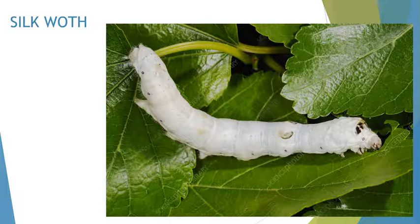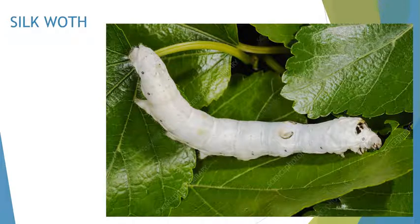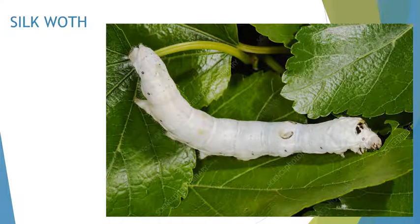Silk moth. We get silk from silk moth, which grow on mulberry leaves. The silk moth secretes a liquid which changes into a fine thread. The moth weaves a cover around itself with this thread. This cover is called a cocoon. These cocoons are collected and silk thread is obtained from them.